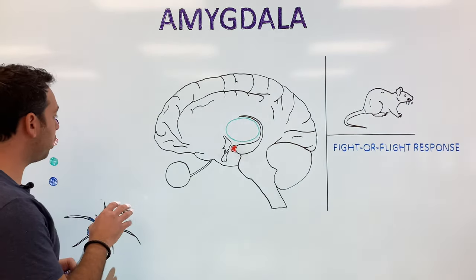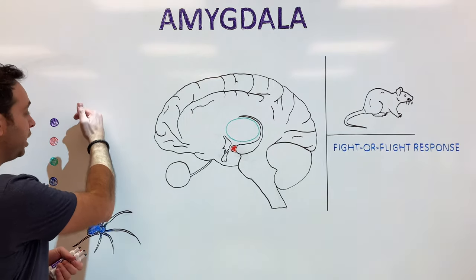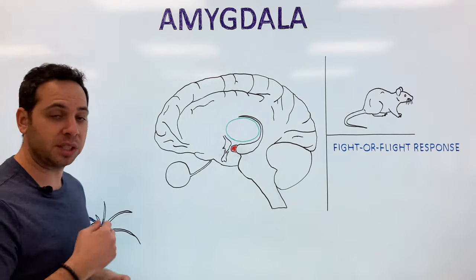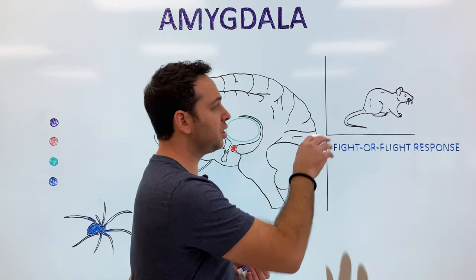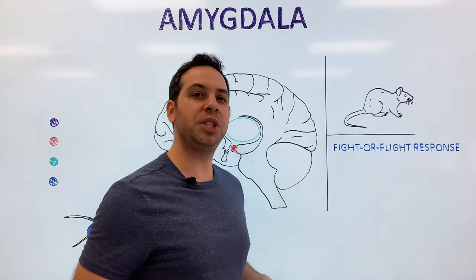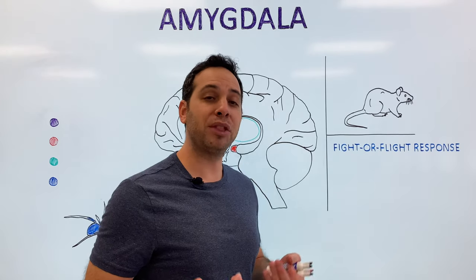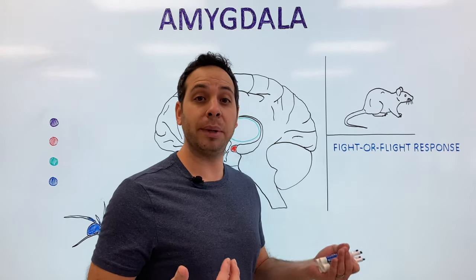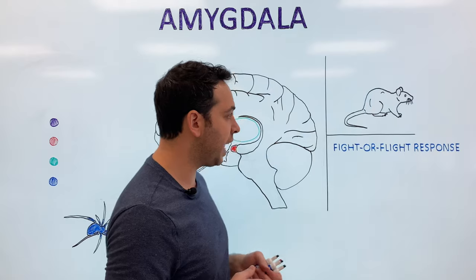In this video, we're going to focus on two big things. One is the four functions of the amygdala. We'll also touch on some animal research — like, how do we actually know about the function of the amygdala and what it does?